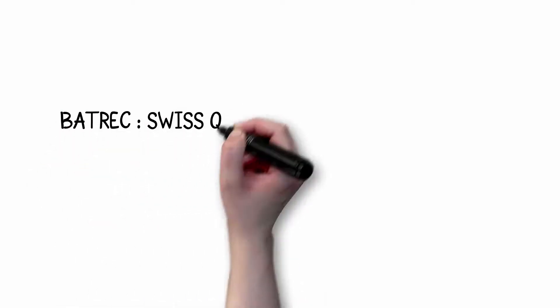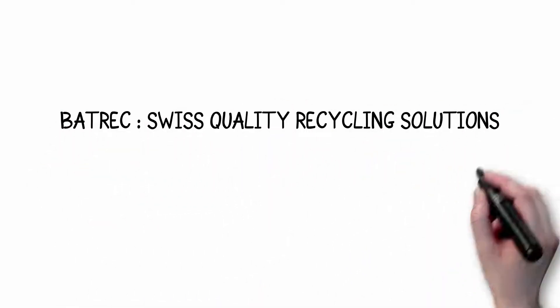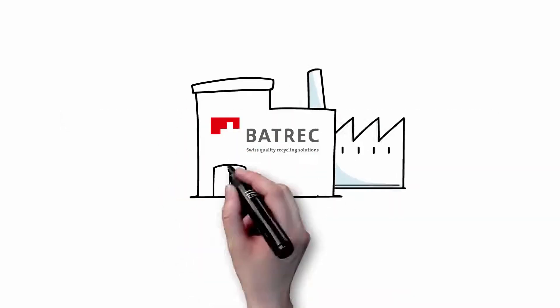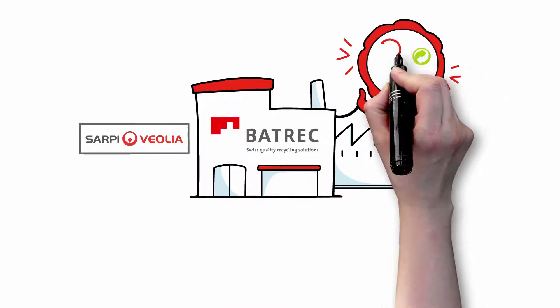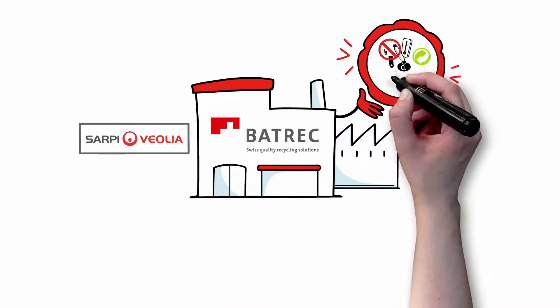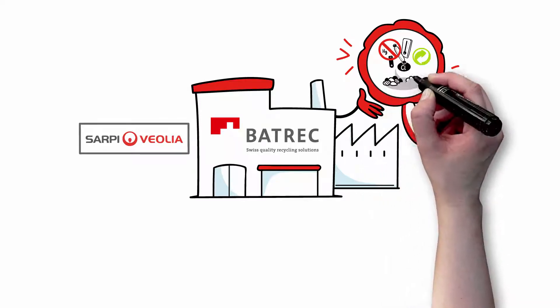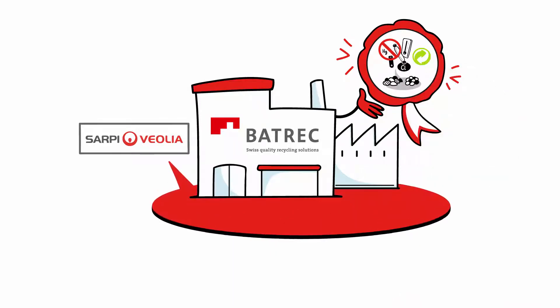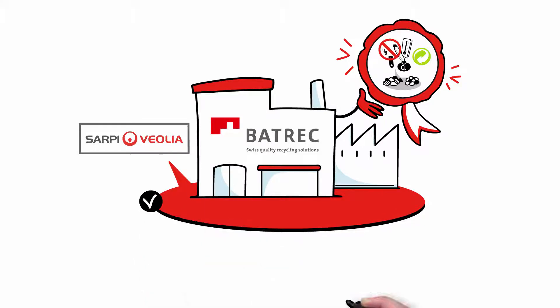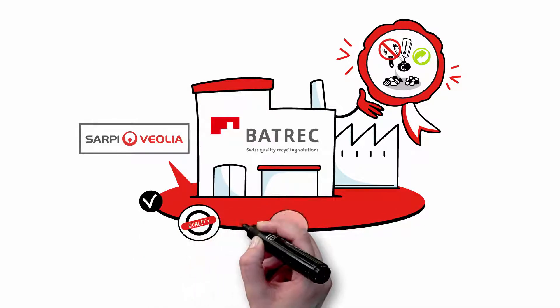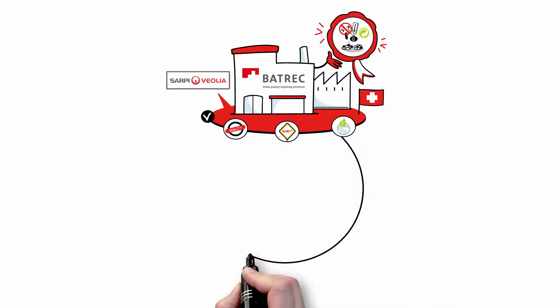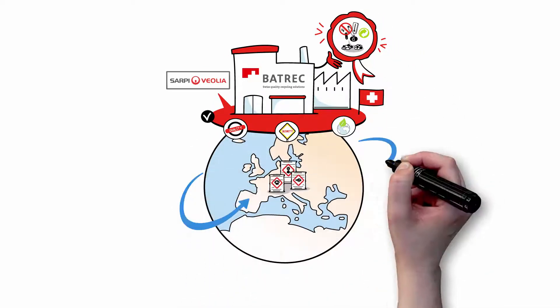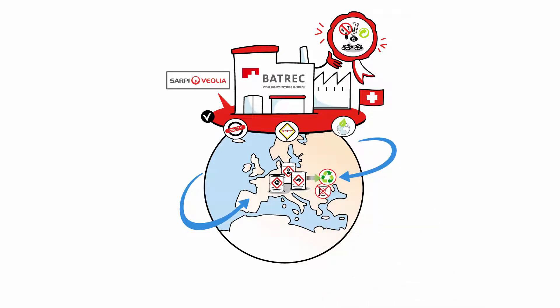Batrec is part of the Sarpy Veolia Group, specialized in the recycling and disposal of all waste containing mercury, as well as activated carbons and mercury absorbents. These added value services are based on the highest standards in terms of quality, security, and environment. At our Swiss facility, we turn waste into resources for clients from around the world.